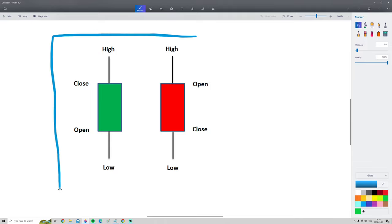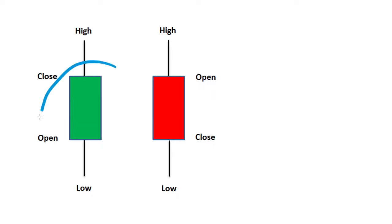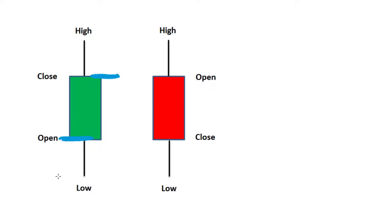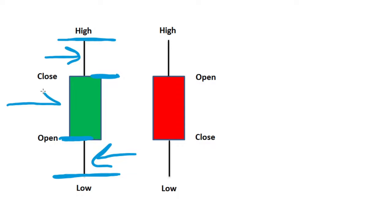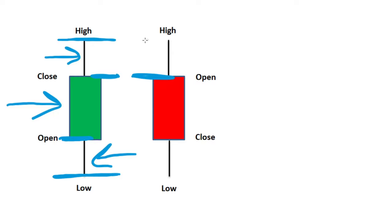Let's quickly go over how to read candlesticks. A green candle means the price went up — it opens at the lower part of the green body and closes at the top. The lowest point reached during the candle is shown by the bottom wick, and the highest point is shown by the top wick. The small thin parts are called the candlestick wicks, and the large colored part is called the candlestick body. The exact opposite is true for a red candle — it opens high and closes lower.